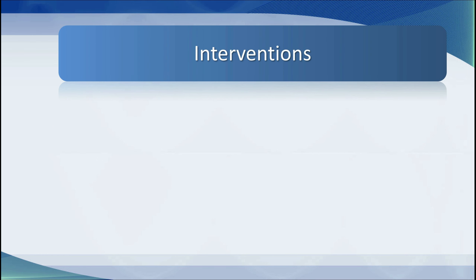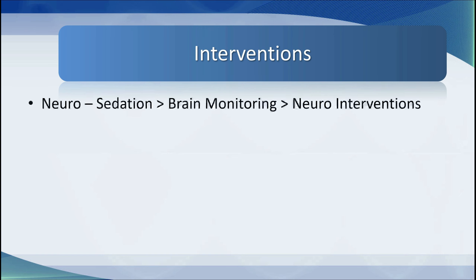Let's look at the different body systems we intervene with in the ICU. In the neurological system, we routinely sedate patients so that they are calm, not upset, and not traumatised by being in the unit. There are also different levels of brain monitoring and specific brain interventions available.